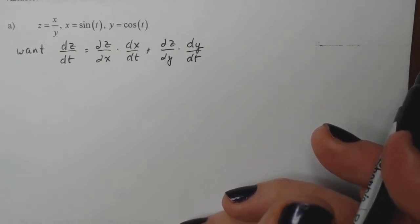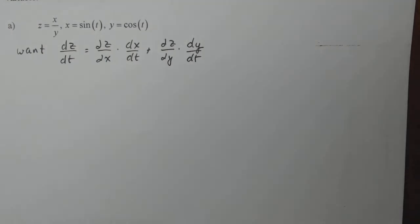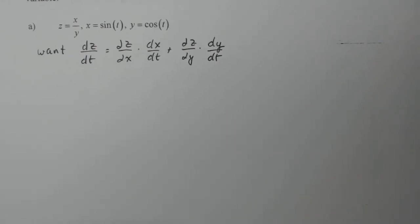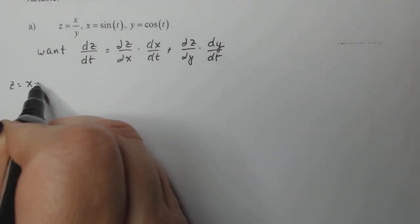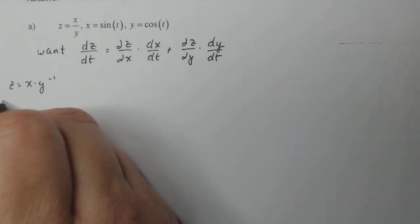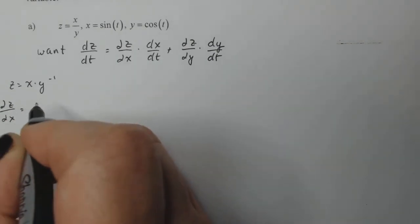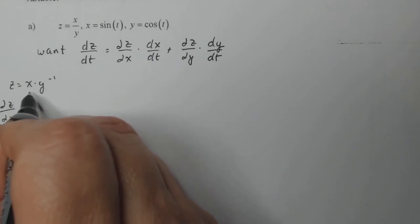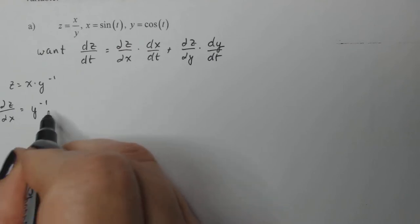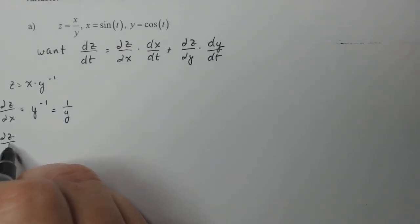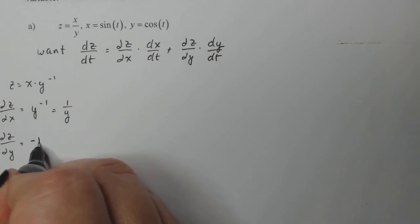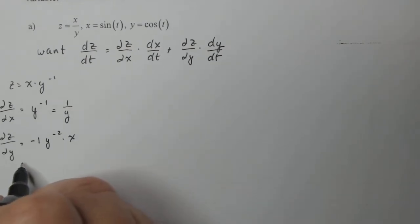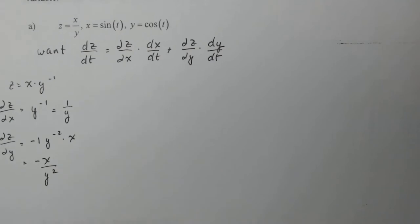There is one more step to think about, but let's find those four pieces first. I need the partial of z with respect to x. Z is x times y to the minus one — it's easier to take the derivative that way. The partial of z with respect to x means y is the constant, so the derivative of x is just one, giving us y to the minus one, or one over y. For the partial of z with respect to y, x is the constant, so I bring down the power and subtract one, simplifying to minus x over y squared.